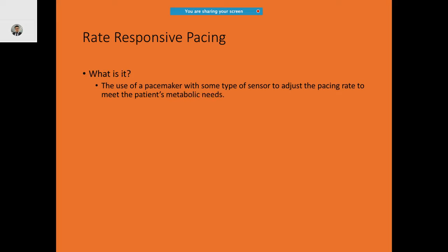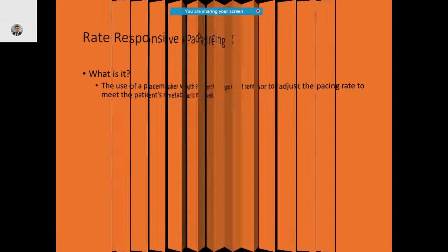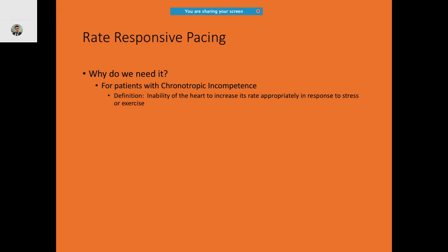Rate-responsive pacing uses a pacemaker with a sensor to adjust the pacing rate to meet the patient's metabolic needs. For example, in chronotropic incompetence, the heart is unable to increase its heart rate appropriately in response to stress or exercise — there is a limit beyond which it cannot raise the rate, making the patient symptomatic and unable to do much work.